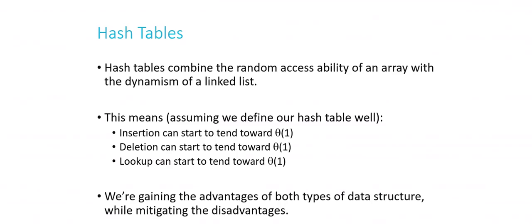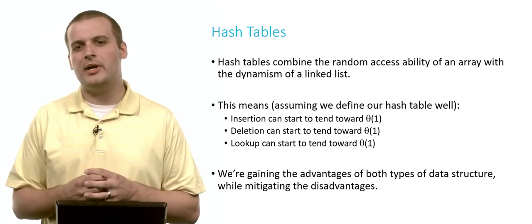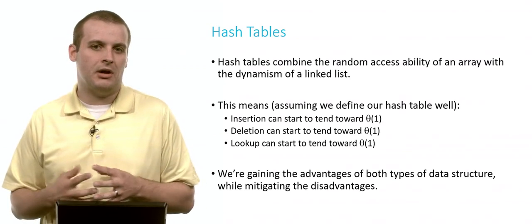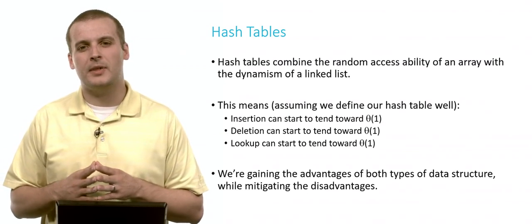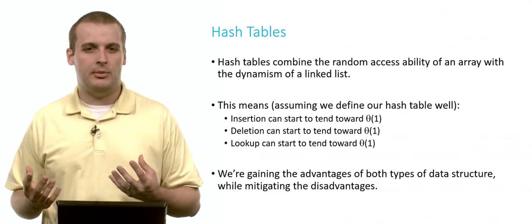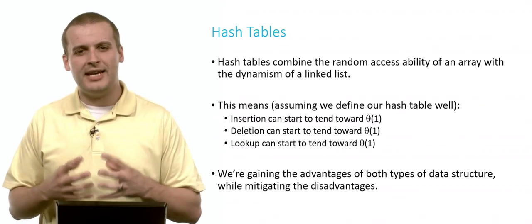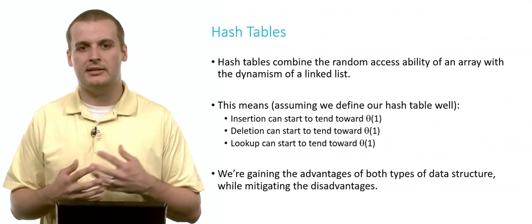In a hash table, we're going to try and combine an array with a linked list. We're going to take the advantages of the array, like random access, being able to just go to array element 4 or array element 8 without having to iterate across. That's pretty fast. But we also want to have our data structure be able to grow and shrink and be able to add and remove things very easily.